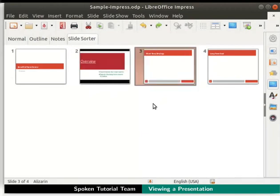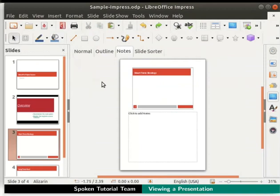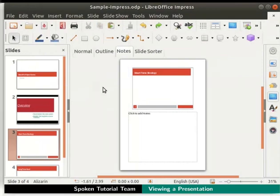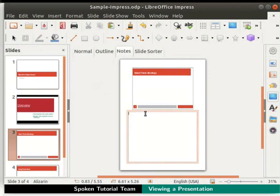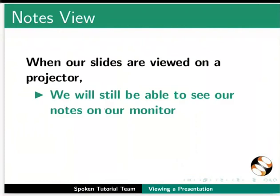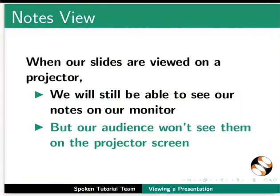Next, we will see the notes view. Click on the notes tab in the workspace. Alternatively, we can see the notes view by clicking on the View menu in the menu bar, then click on the Notes option. In the notes view, we can write notes that will help us during our presentation. Click on the click to add notes text box below the slide on the workspace and type some text inside it. Now click anywhere outside the text box. When our slides are viewed on a projector, we will still be able to see our notes on our monitor, but our audience won't see them on the projector screen.